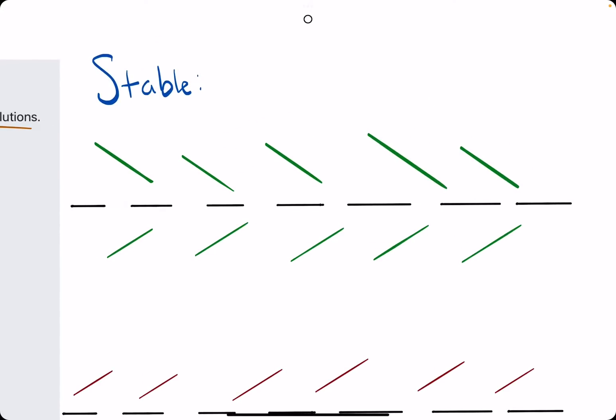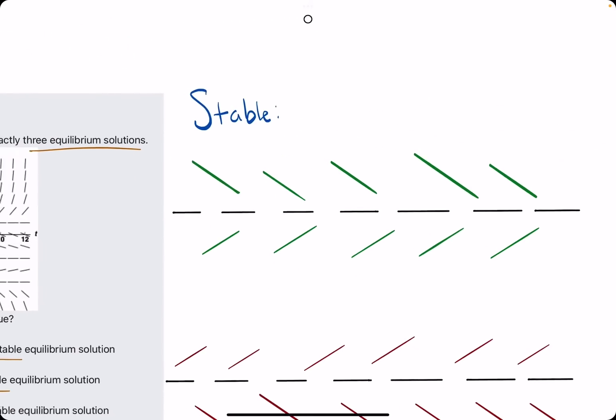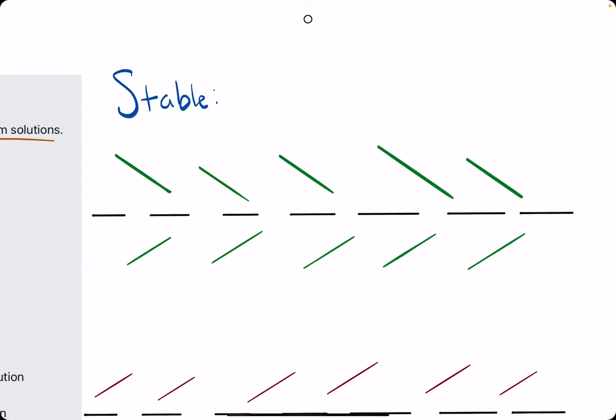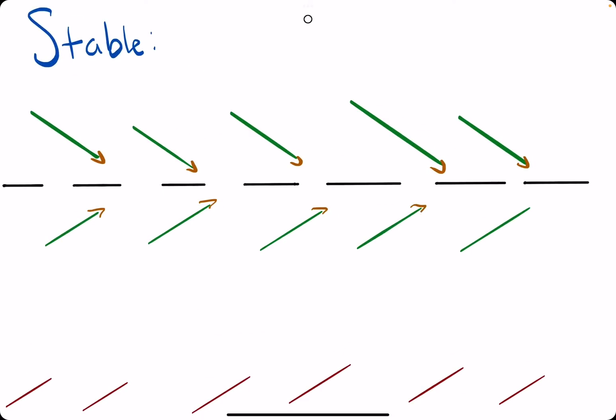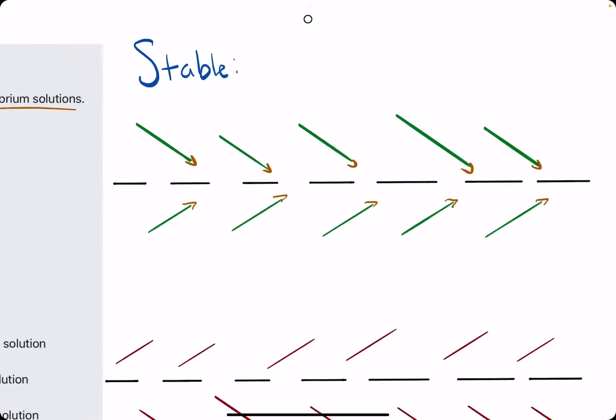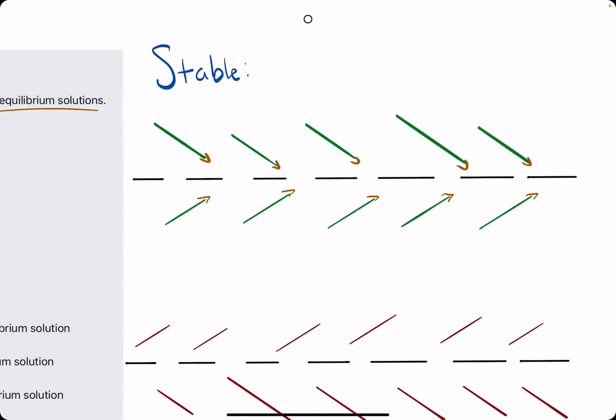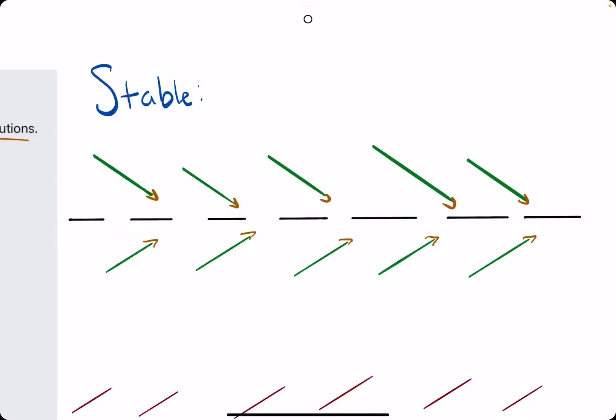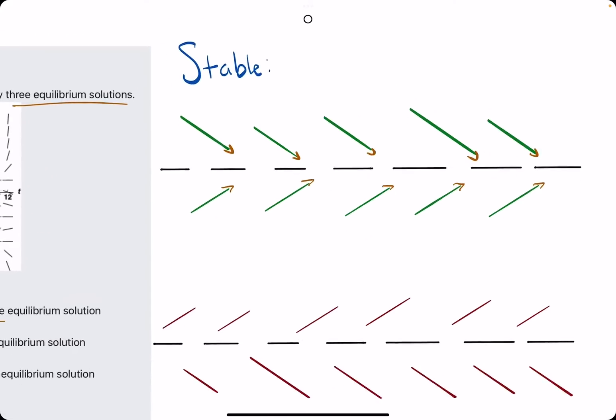So when we see an equilibrium solution, represented by the black dashed lines here, we want to visualize, we basically want to scan it from left to right. So as we go from left to right, are the slopes above and below it going towards the equilibrium solution? That's what we want to look for. So from the top and from the bottom, are they approaching the equilibrium solution, going towards it from left to right? If they are, this is a stable equilibrium solution.